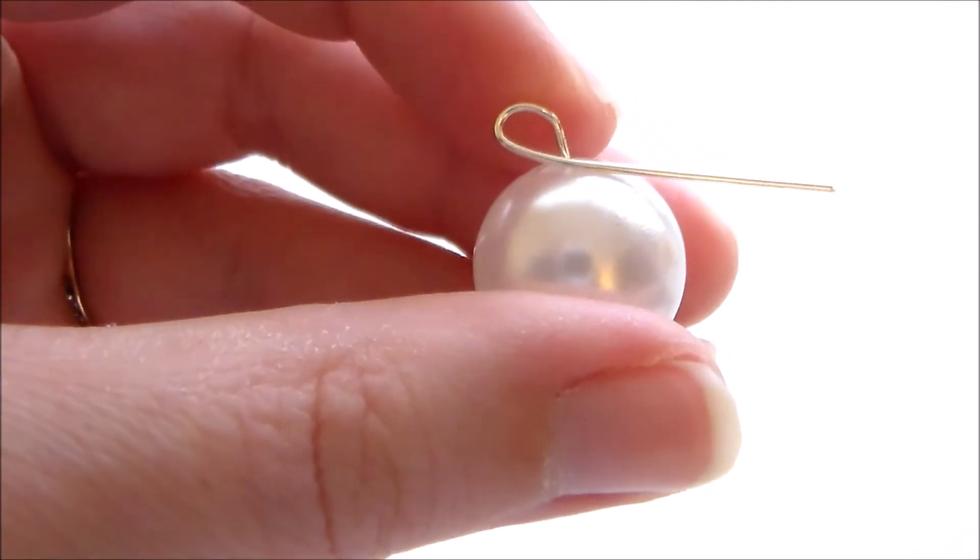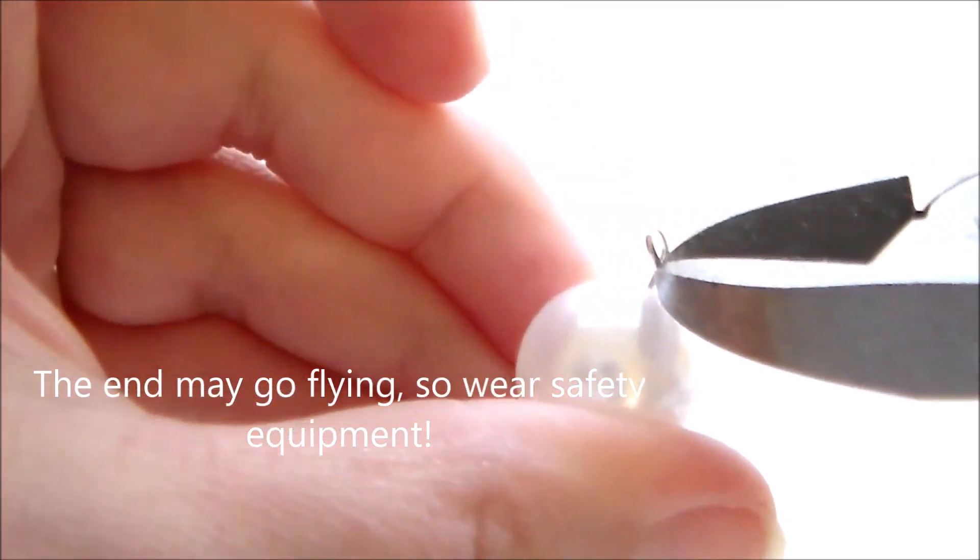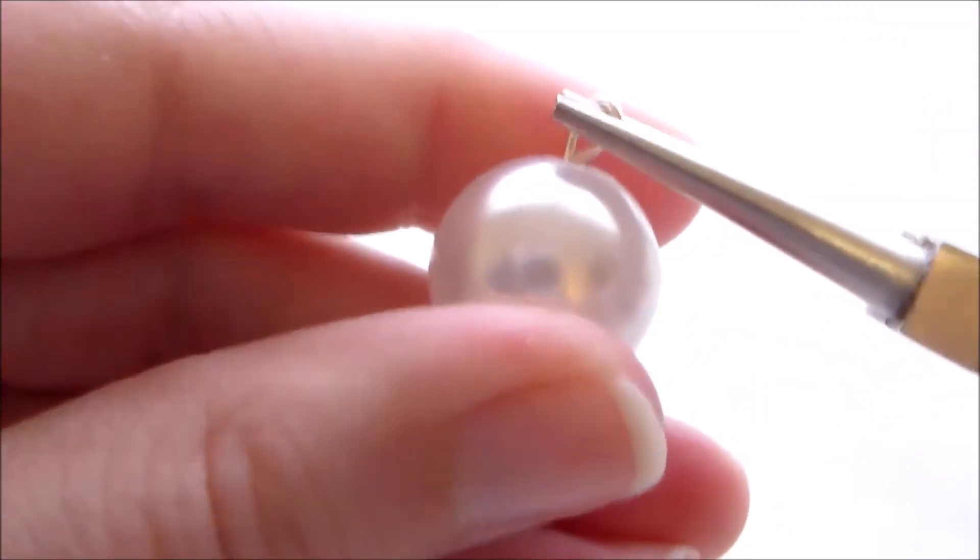Then we're going to use a pair of snippers to trim off the excess. Then use your pliers to round out the shape.